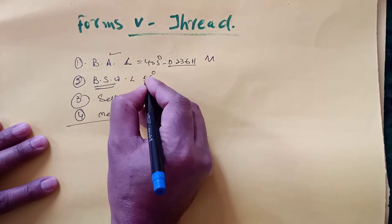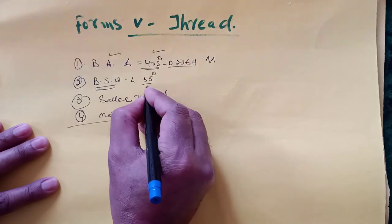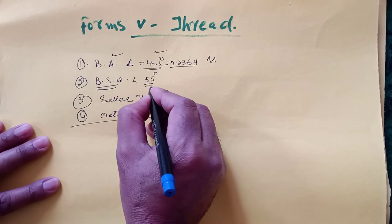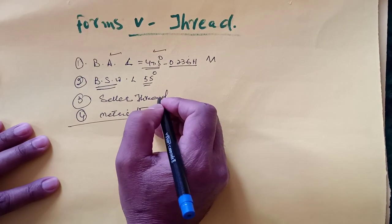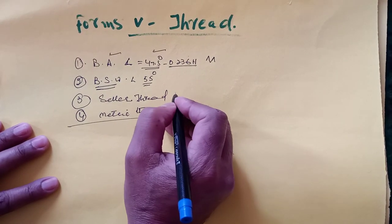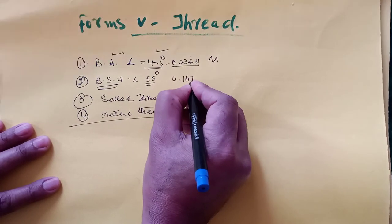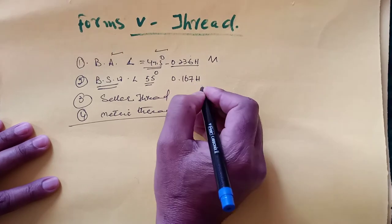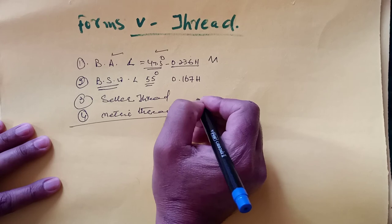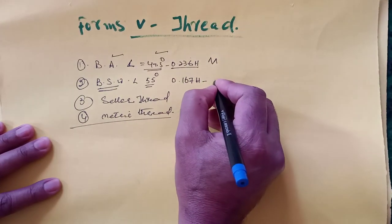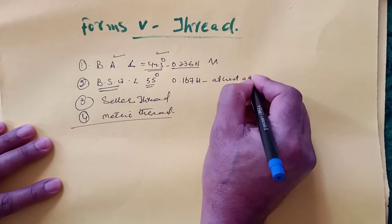Main difference here is angle 47.5 degrees versus angle 55 degrees. The depth of the thread is 0.167H, where depth of full width is rounded off at crest and root.